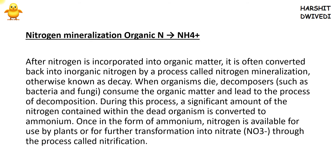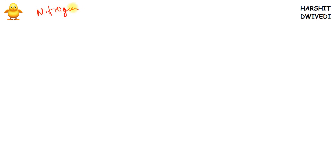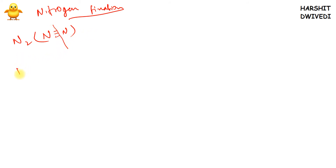First I am going to talk about nitrogen fixation. What basically is nitrogen fixation? We know that atmospheric nitrogen is N2, which has a triple bond — a very strong bond. In nitrogen fixation, this strong bond is ruptured and the free nitrogen gets associated with hydrogen to form NH4⁺, the ammonium ion.